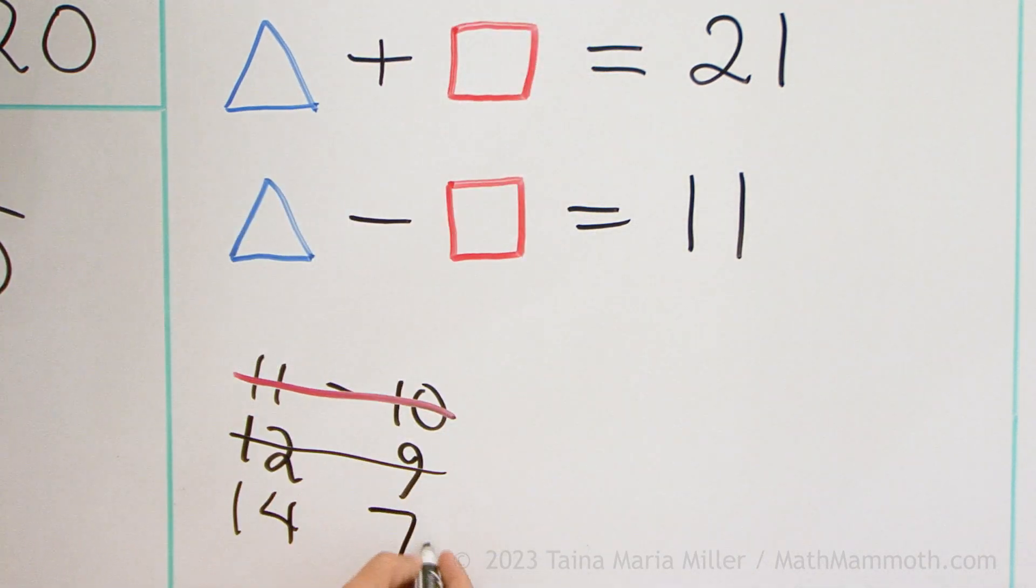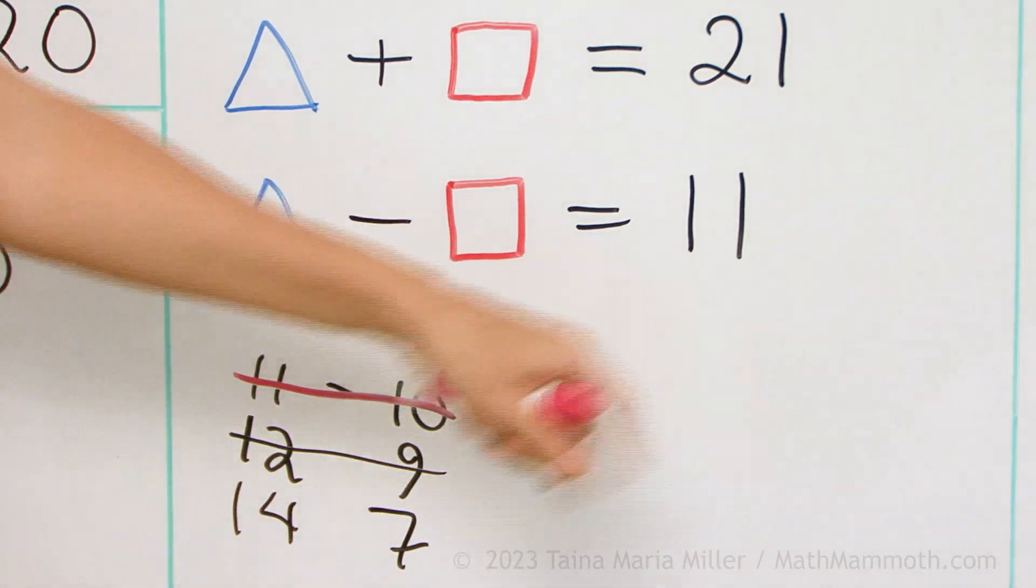14 and 7. How about that? No, 14 minus 7. No.